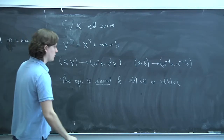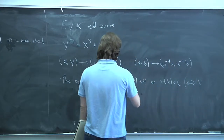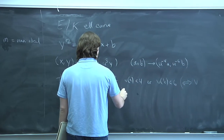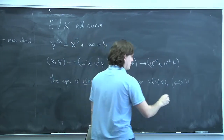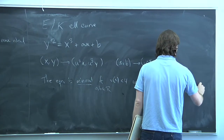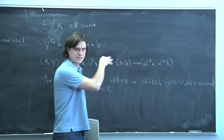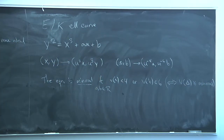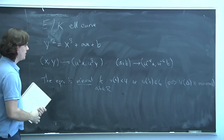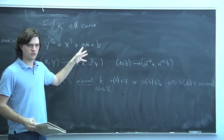So we say that the equation is minimal if the valuation of a is strictly less than 4 or the valuation of b is strictly less than 6, with a and b in R. This is equivalent to saying that the valuation of Δ is minimal over all possible models. And once you've got a minimal equation, it's still not unique because you can change by letting u be a unit, but that's all you can do. So this is unique up to change of variables where u is a unit.